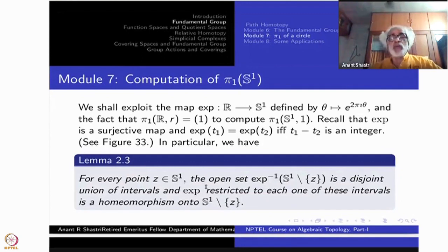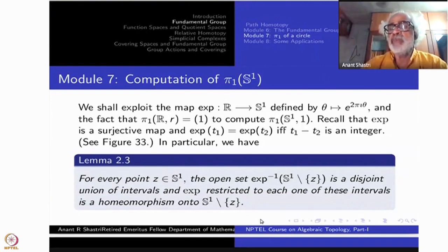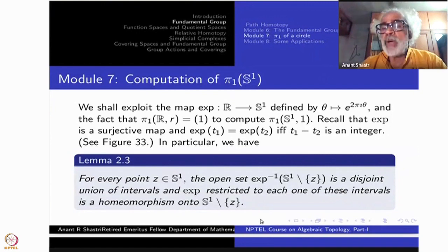So this lemma says the following. For every point Z in S¹ the open set exponential inverse of S¹ minus Z - throw away one point. How does the inverse look like? It is a disjoint union of intervals. And if you take exponential function restricted to each of these open intervals, it is a homeomorphism onto this S¹ minus a single point. No matter what point you throw away.